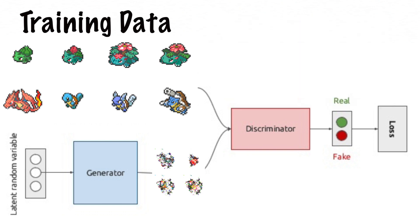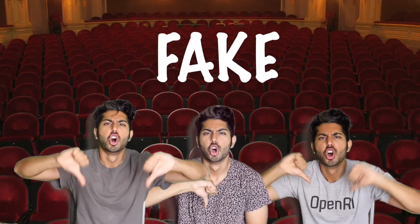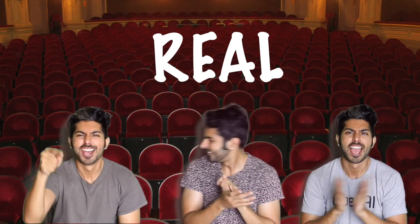The discriminator's job is to classify the generated Pokemon as either real or fake. Think of G as a magician and D as his audience. The magician is constantly trying to make the audience believe that his illusions are real magic. The audience boos when it can tell that his tricks are fake, and applauds when it can't tell the difference.